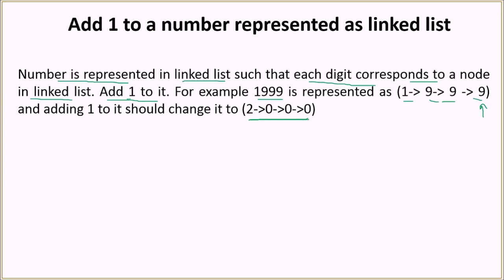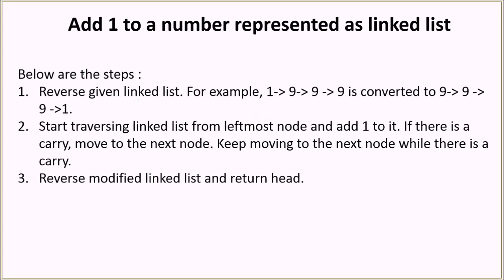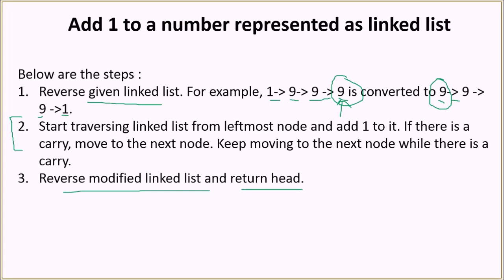When you add 1 to 1999, it changes to 2000, so that should be our output. The output will also be a linked list. Let's look at the steps to solve this problem. First, we will reverse the given linked list, so 1→9→9→9 will be converted to 9→9→9→1. This is done so that we can directly add 1 to the least significant bit.